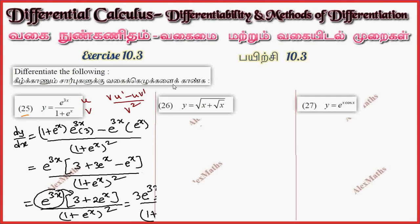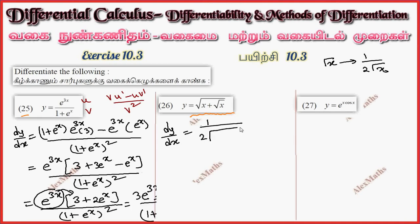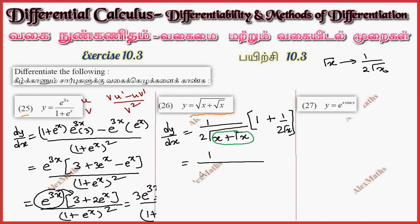Question 26: y equals root of x plus root x. The derivative of root x is 1 by 2 root x. Using chain rule, the differentiation of the bracket: differentiation of x plus root x, which is 1 plus root x derivative 1 by 2 root x, times 1 by 2 root of x plus root x.